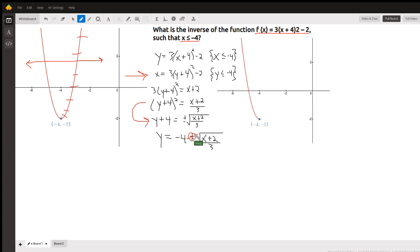But in the end, we'll reject the plus sign because we want the y value to be less than or equal to negative 4. And if I use the plus here, the y values will be greater than negative 4 because this will be a positive square root.